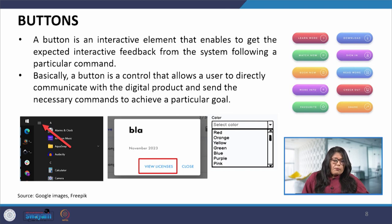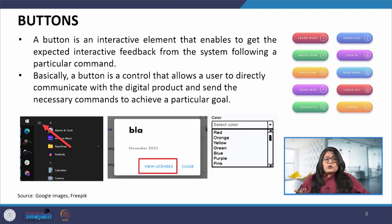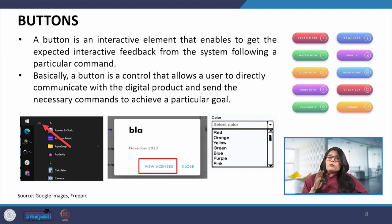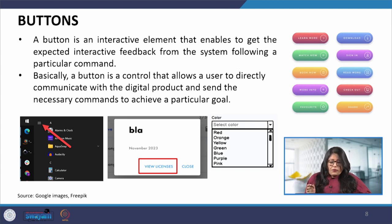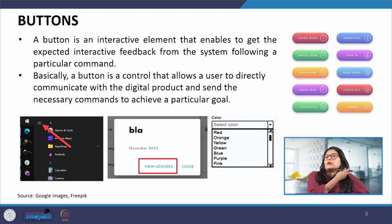Buttons help us achieve an action. Something needs to be pressed, pulled, or dragged — some action has to happen so that the user is able to interact more effectively and get their work done. There are different types of buttons in an interface.